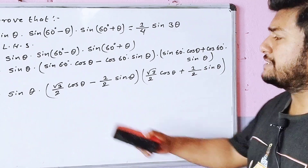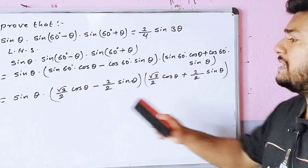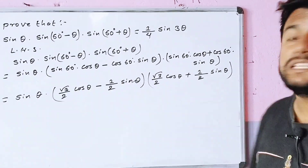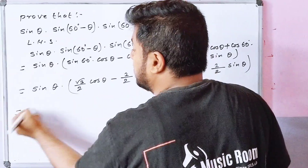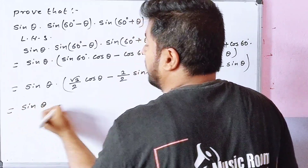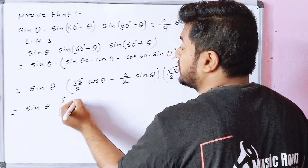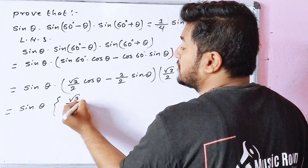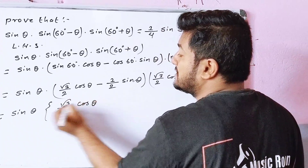Now we can see that this is (a plus b) and this is (a minus b). If we have (a plus b) into (a minus b), what can we do? We can apply a squared minus b squared.